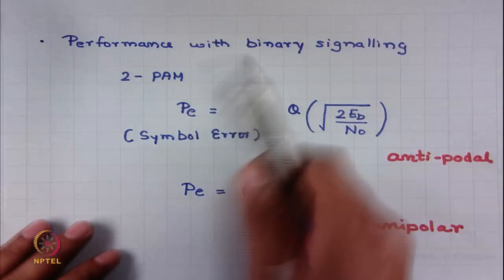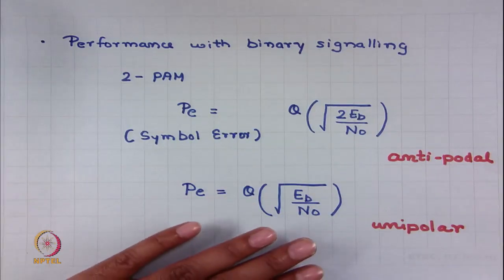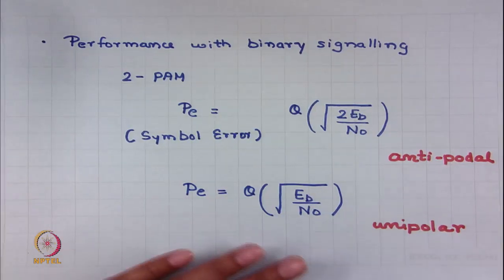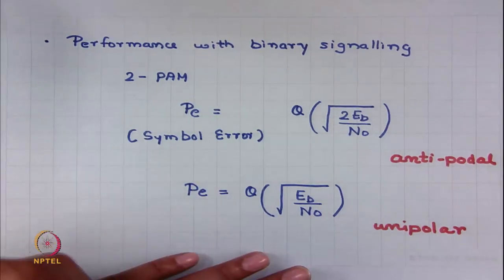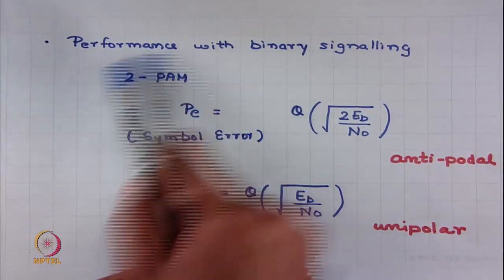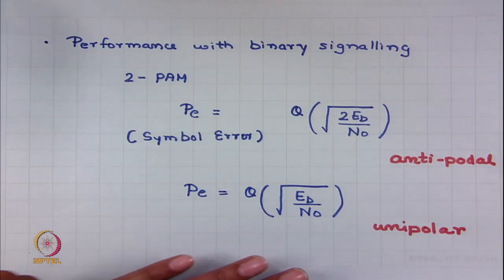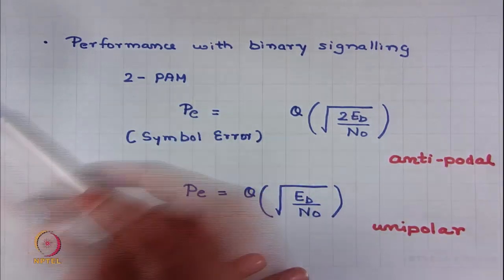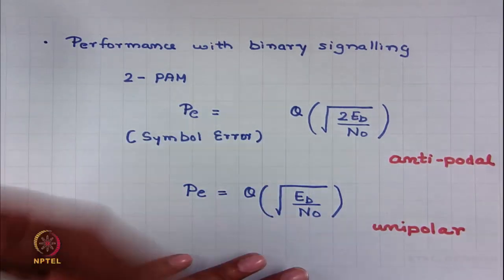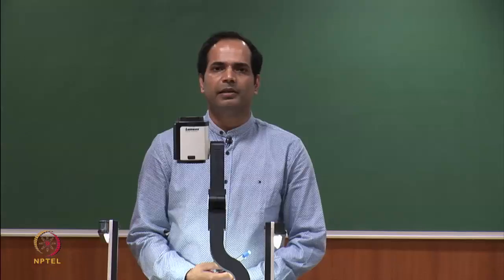In this lecture, we will concentrate on the performance of binary signaling systems. We have already looked into this — for example, the probability of error in the case of 2-PAM. Whenever we say probability of errors, we mean probability of symbol error, i.e., with what probability are the symbols decoded incorrectly.